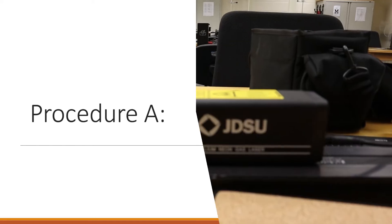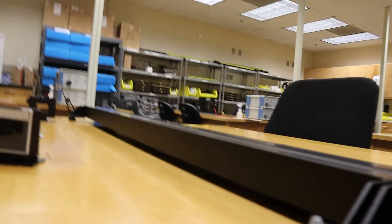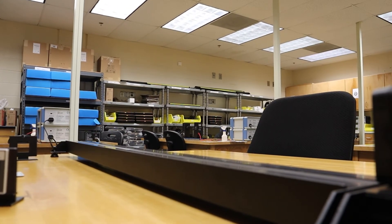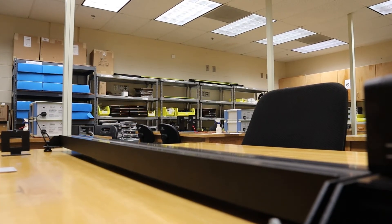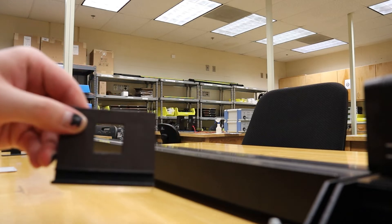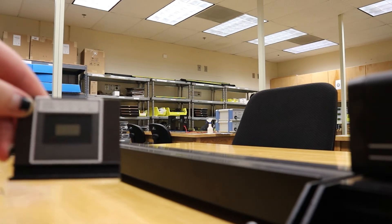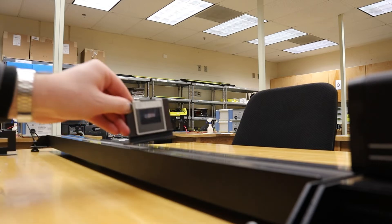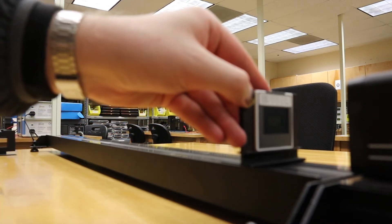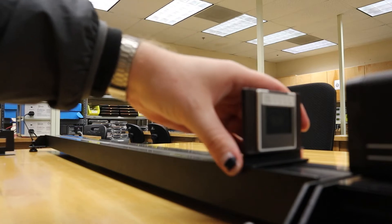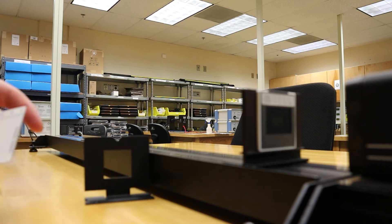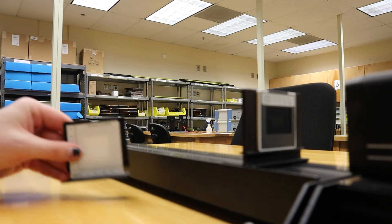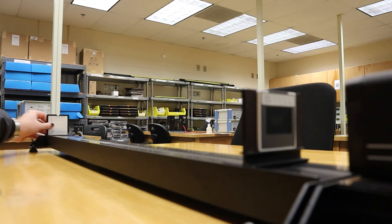For Procedure A, with the laser placed on the optics bench, we will place the single-slit component on the old component holder. We will then place this on the optics bench relatively close to the laser. Next, we will attach the viewing screen onto a standard component holder and put this at the end of the optics bench.